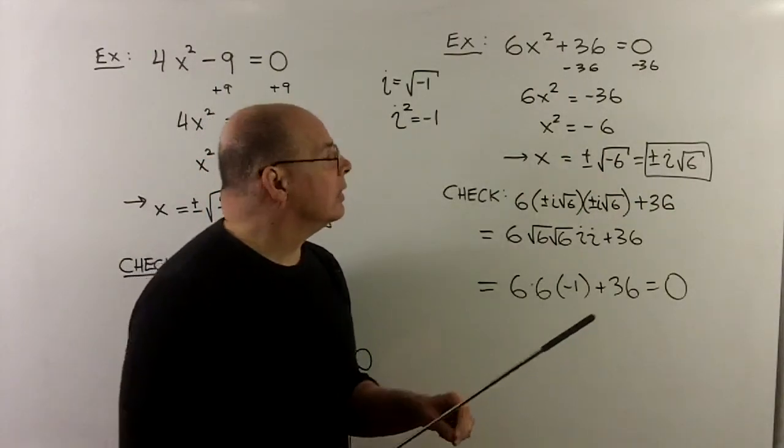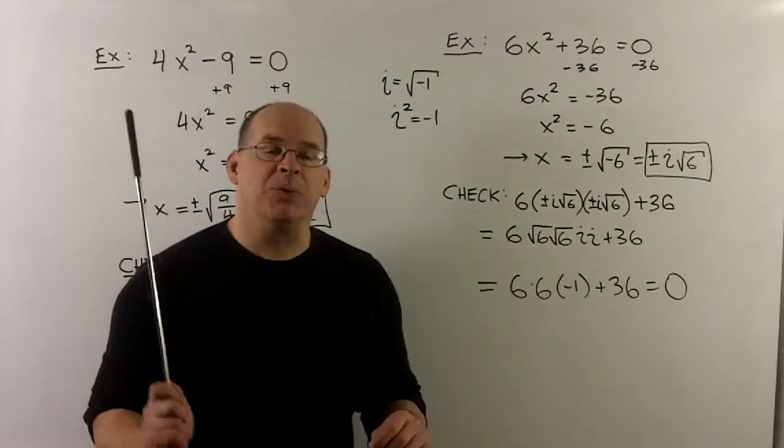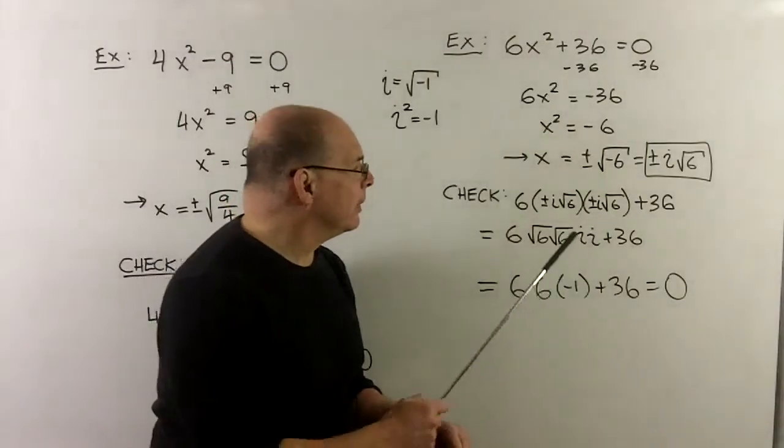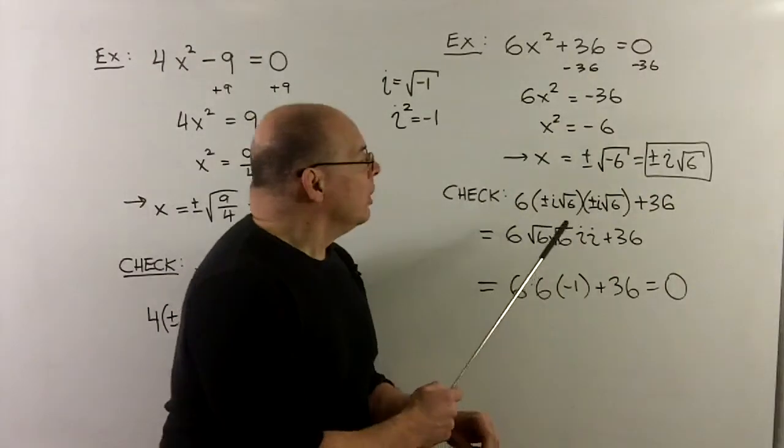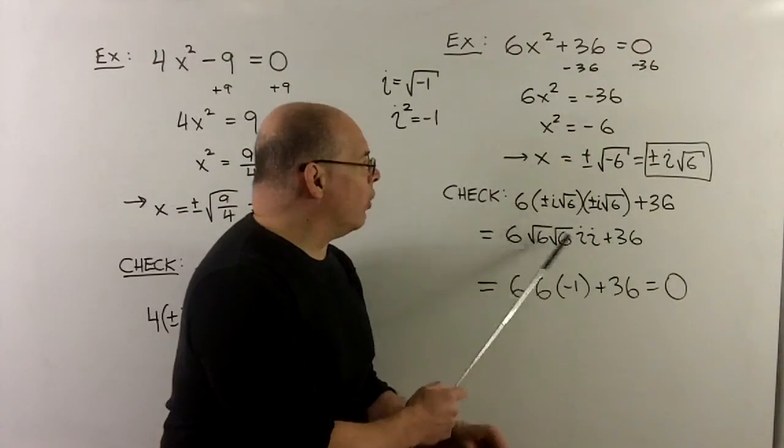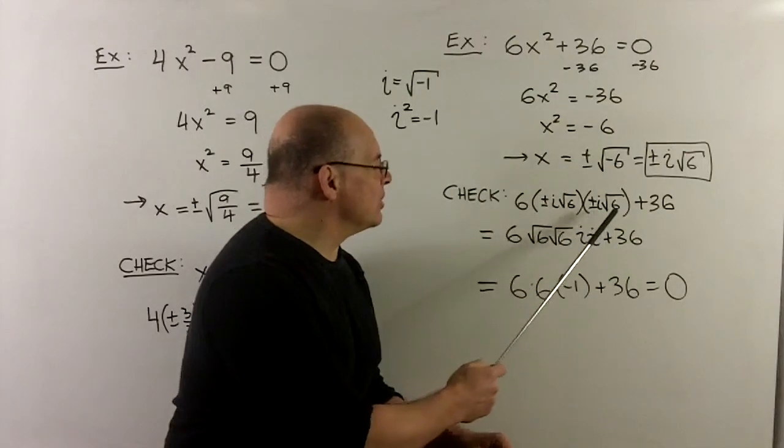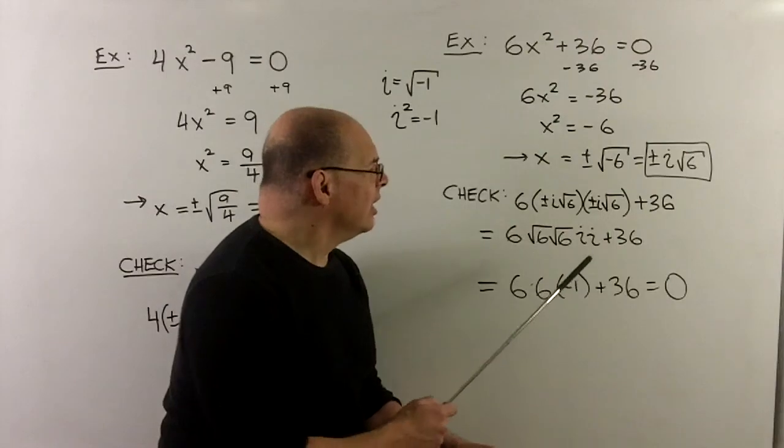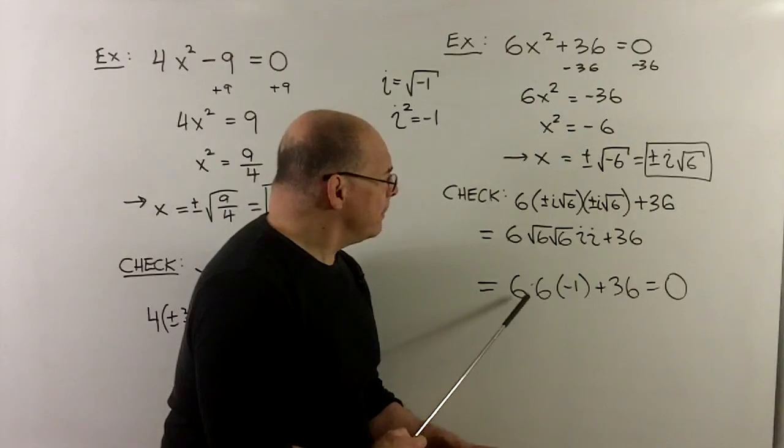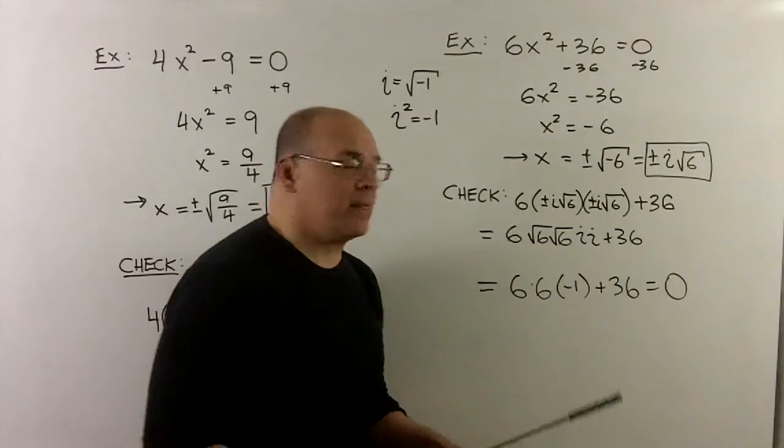Of course, we check. So we'll take our answer, put it into the square, the x squared. And as before, we'll do both at once because the minus solution is just going to go to a plus. So what are we going to get? Well, we're going to have our answer times itself. As we noted, the negatives are going to go away. We have 6 times, so there's two i's and two square roots of 6's. The square roots of 6's go to a 6. The two i's, i squared, is going to go to a minus 1. And then that gives me a minus 36. We add 36 and we get a 0. And that's our answer.